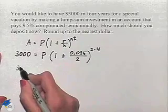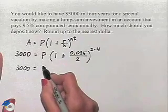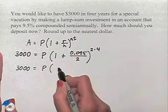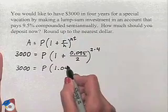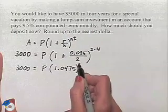So we're going to simplify now to 3,000 equals P times, we're going to have 1.0475 raised to the 8th power.